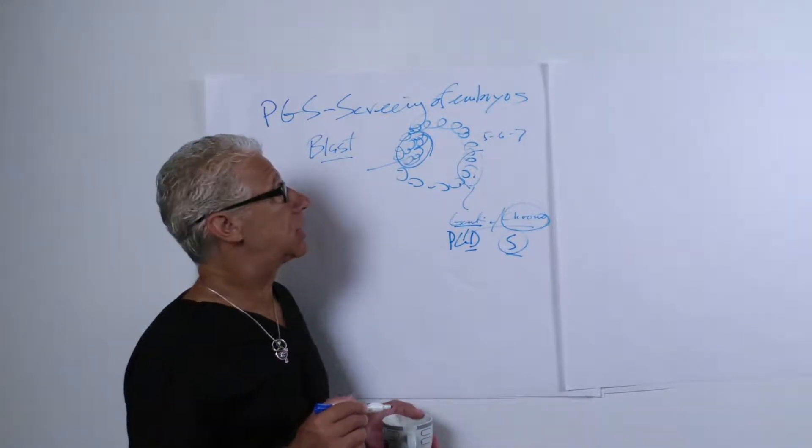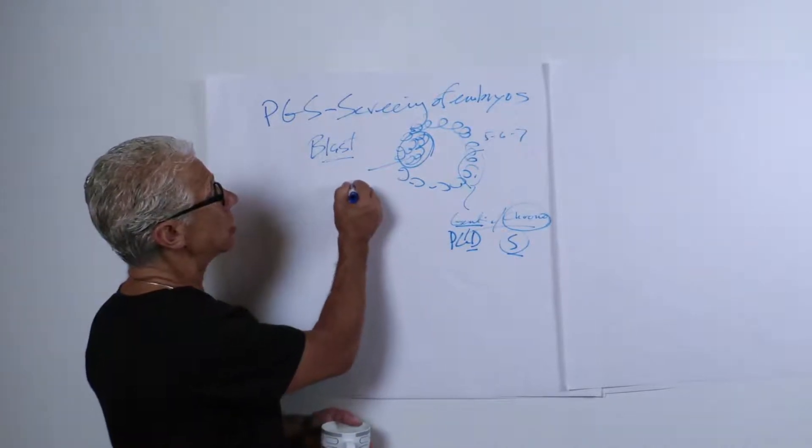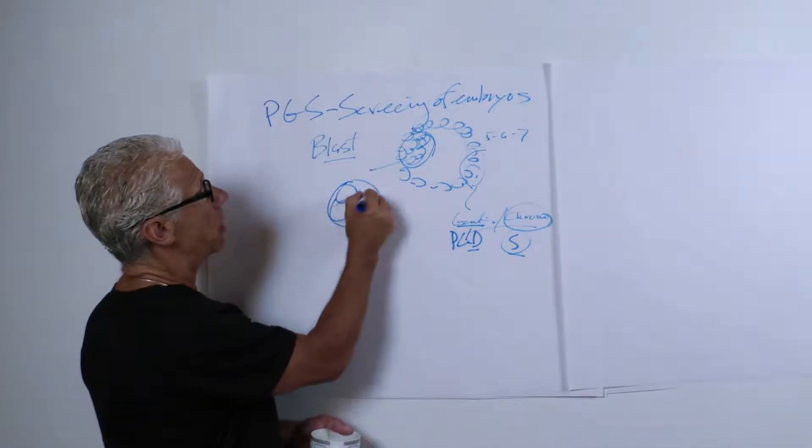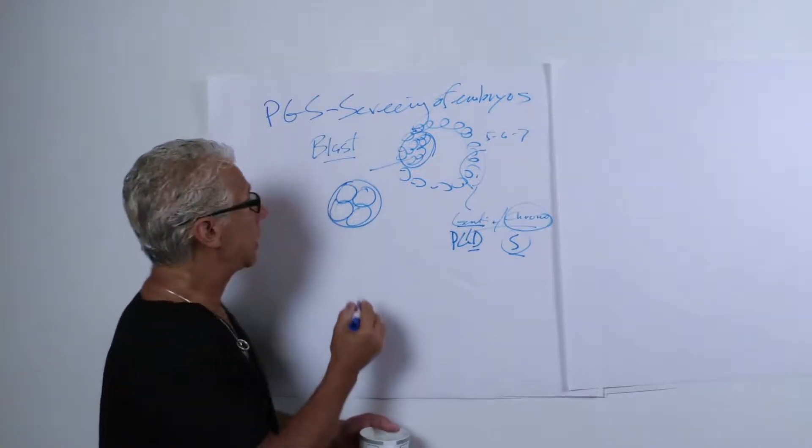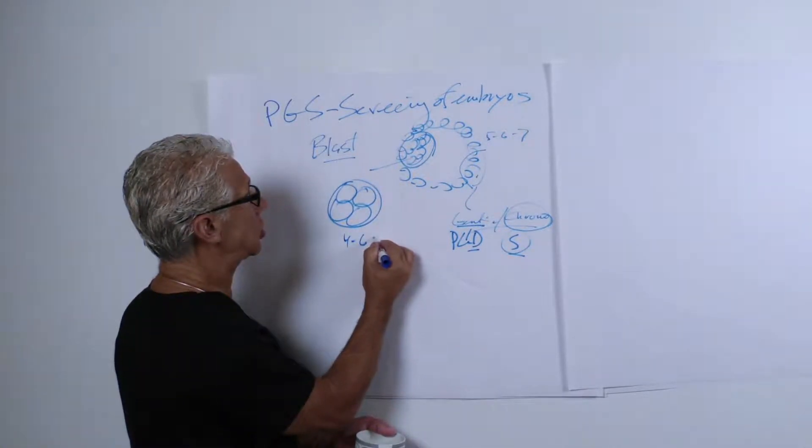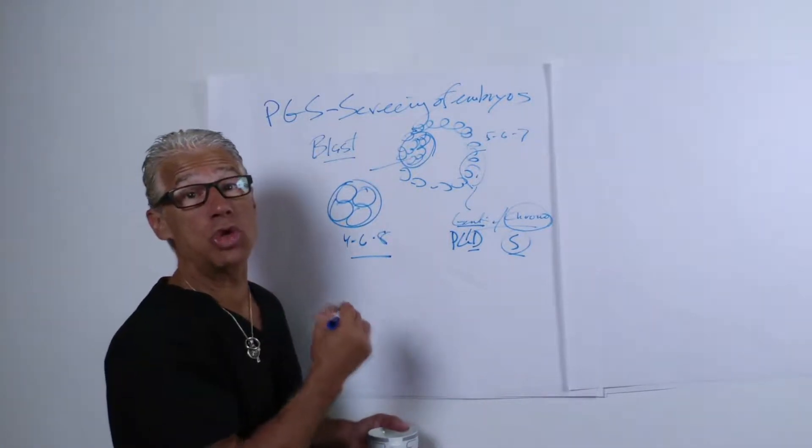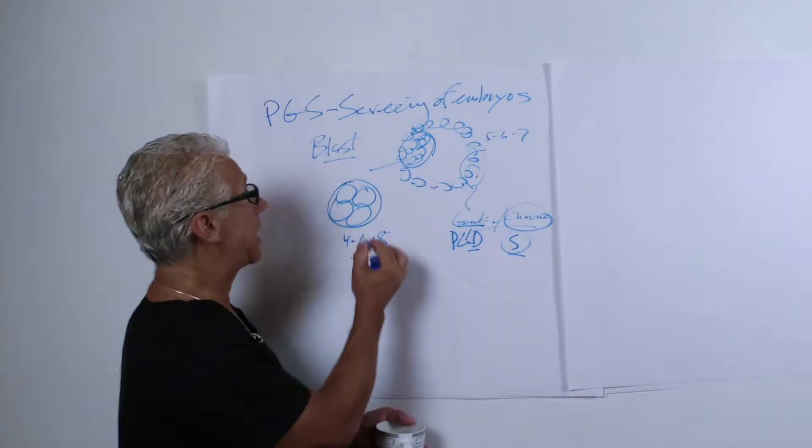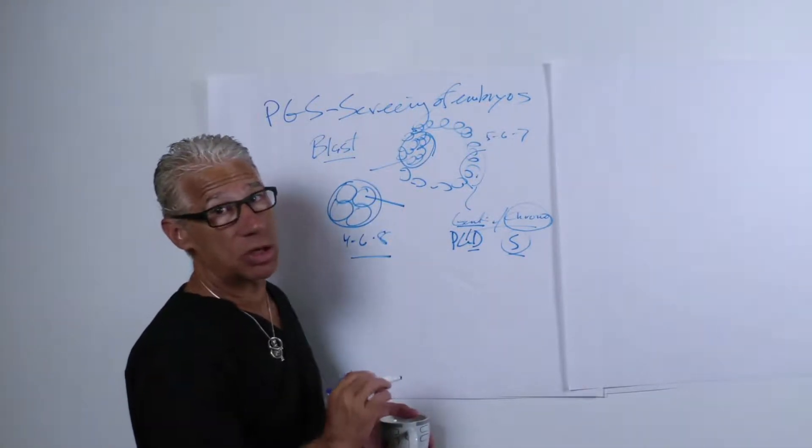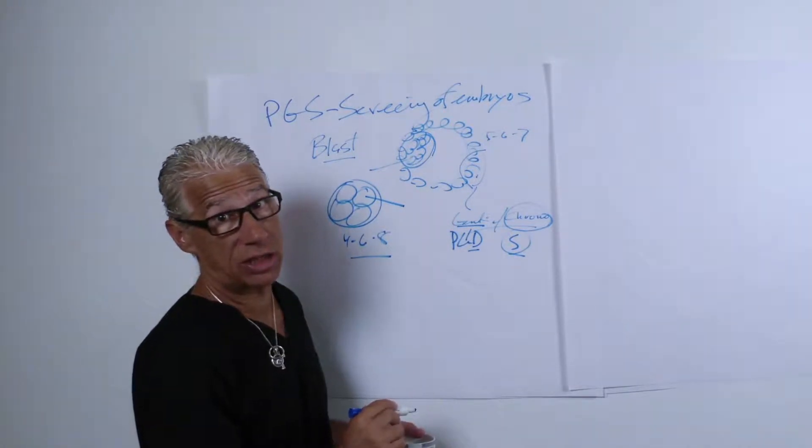The other is, we don't do cleavage stage embryo, which is a day three embryo, which typically has four, six, or eight cell embryos, which is how we used to do these biopsies where we take one single cell, but we don't do those any longer. It's really just at the blastocyst stage.